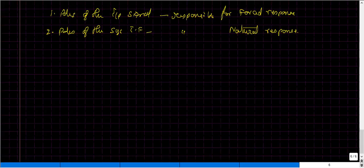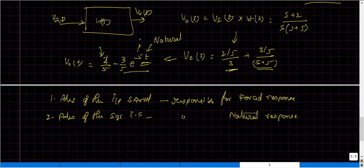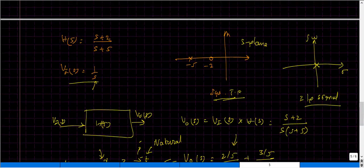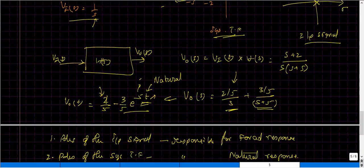This second statement indicates the possibility of making the natural response closer to zero. If the exponential term has a larger magnitude — say 10 instead of 5 — the rate at which the natural response decays would be much faster. So if I move the system pole further from the origin, the exponential term will have a larger value, and as time increases, that leads to a faster decay rate of the natural response.